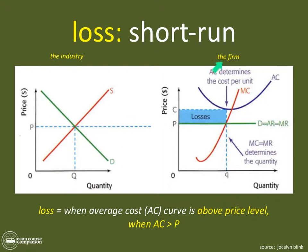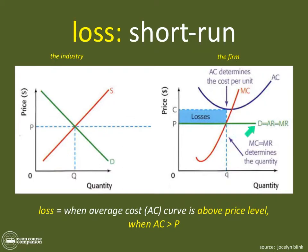For example, the market for corn is going to have an equilibrium price-quantity combination. If you're selling corn, you have to take that price in perfect competition — that's how you need to behave. That's how we derive price.